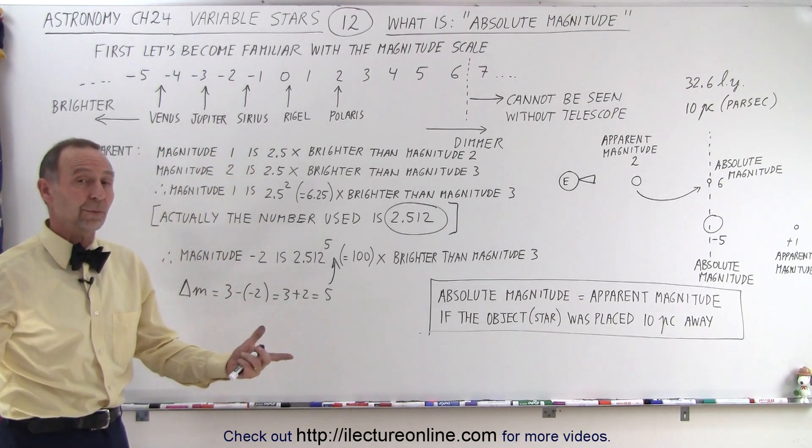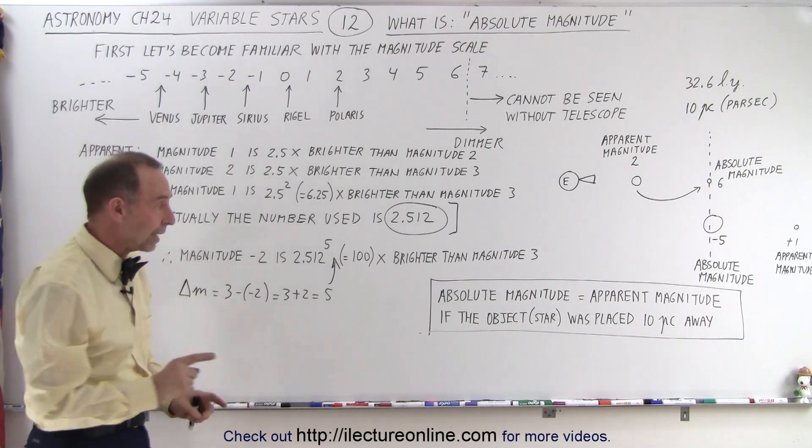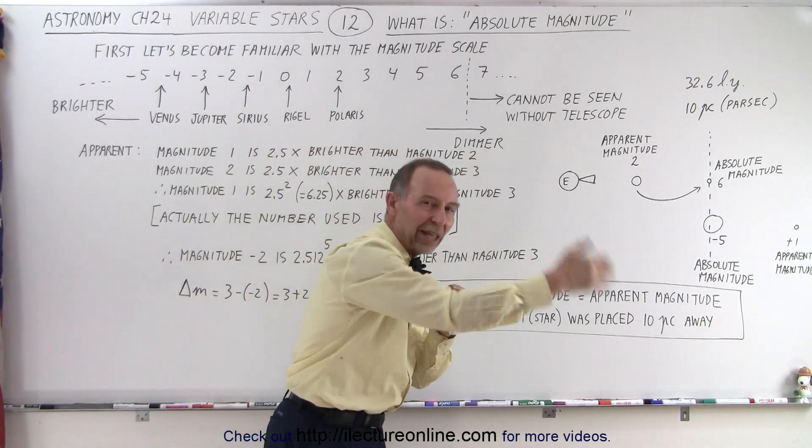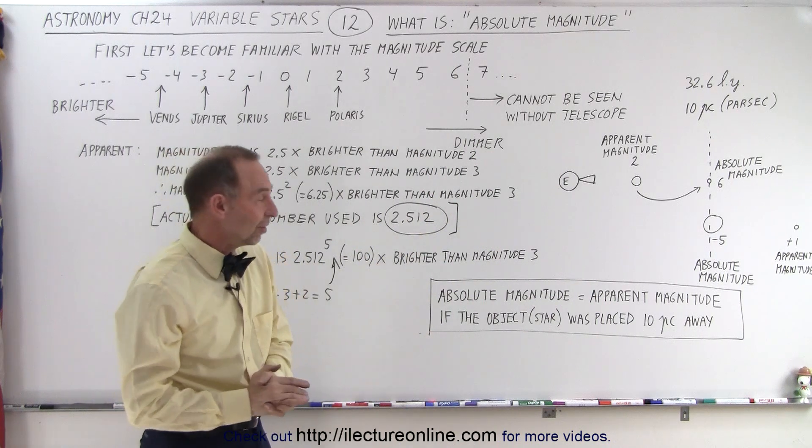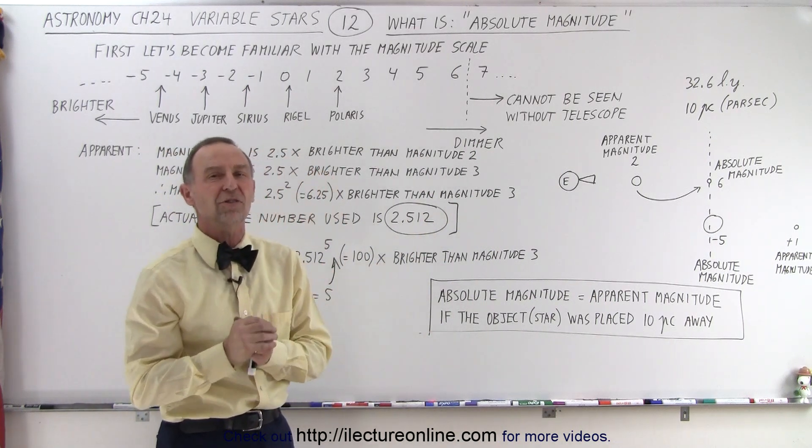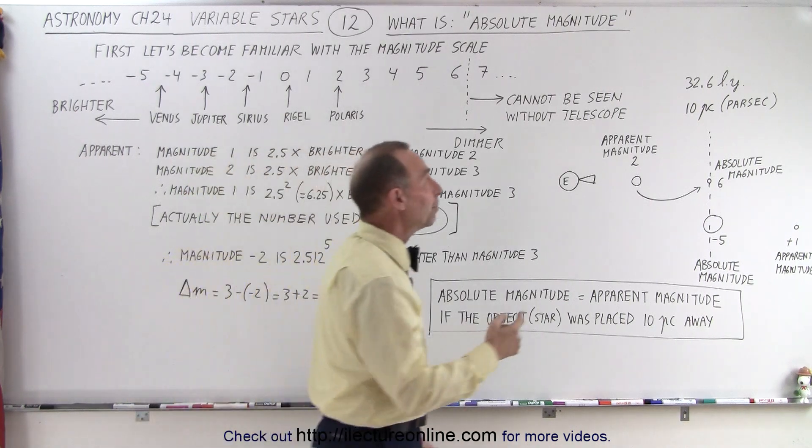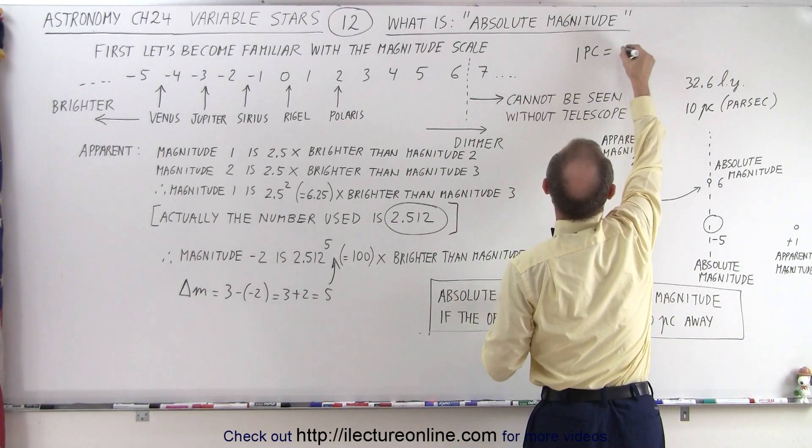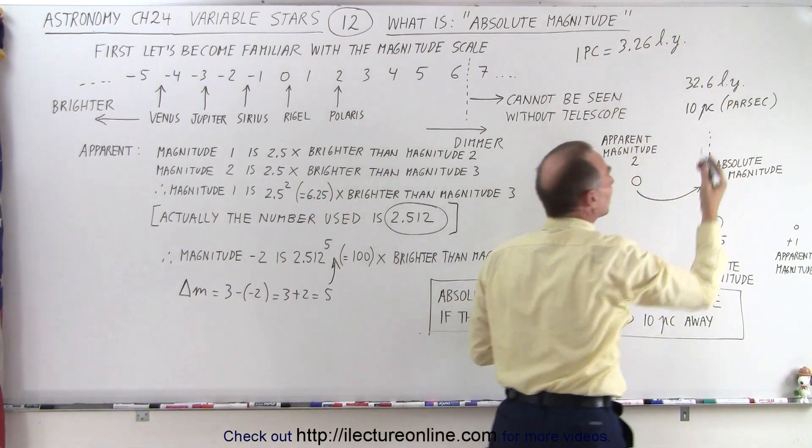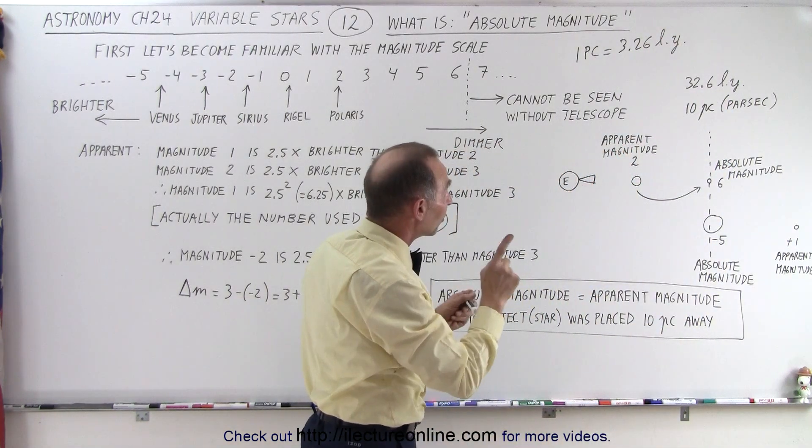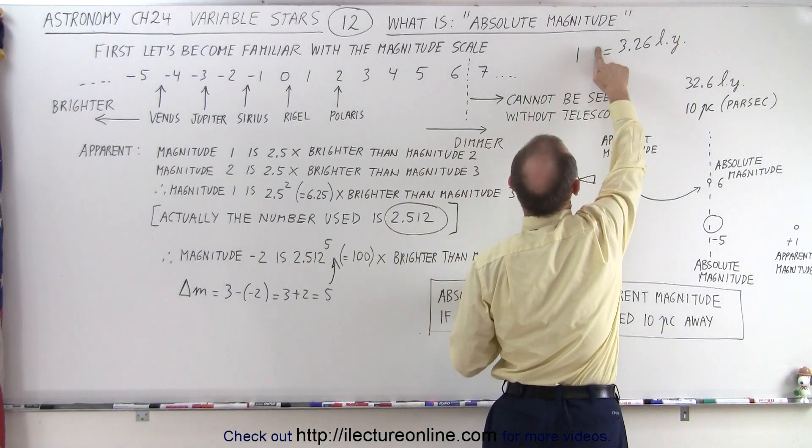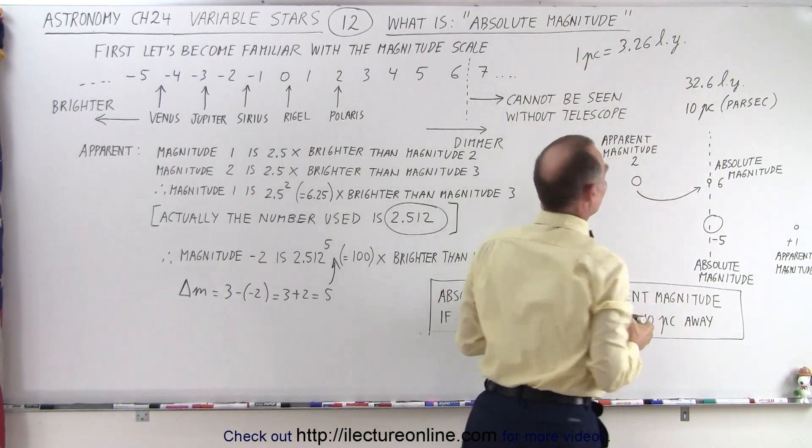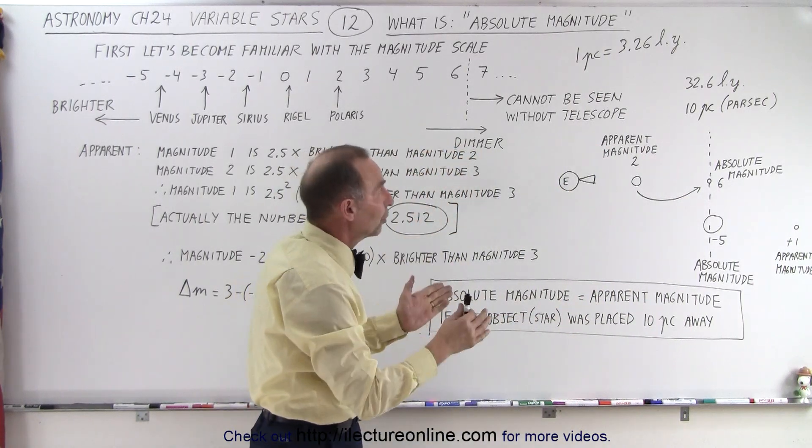But what about absolute magnitude? Because that's what we're here to find out. Well, the absolute magnitude is equal to the apparent magnitude if the object was placed at a particular distance, at some standard distance. The key is what is that standard distance, and the standard distance is 10 parsecs. You may say, what in the world is a parsec? Well, one parsec is 3.26 light years. So one parsec, and we typically write PC with small p and small c, one parsec is equal to 3.26 light years. So 10 parsecs is 32.6 light years.